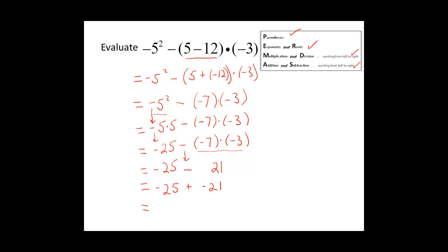So we will add the numbers together and keep the sign. 25 plus 21 is 46. And we will keep the sign negative. So our answer is negative 46.